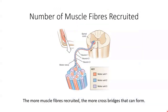Starting with the number of muscle fibres recruited — this is relatively self-explanatory. For some movements, we only need to recruit a small number of muscle fibres because we don't need to produce a large amount of force. Think holding a pen, playing the piano, or doing your hair. For these types of movements, we only recruit small motor units in which the motor neuron innervates only a few muscle fibres.